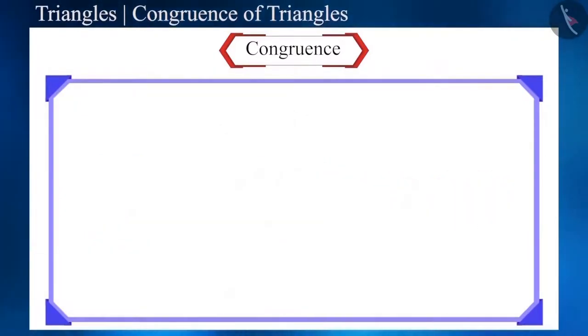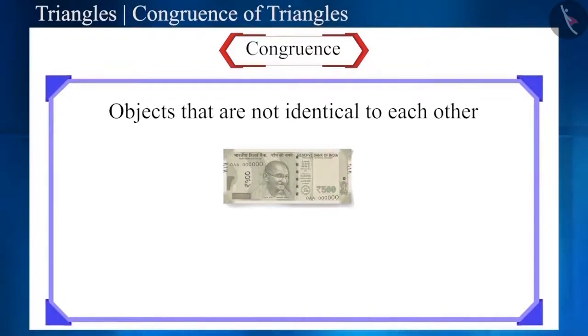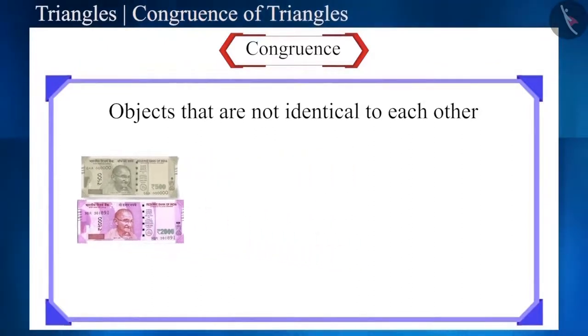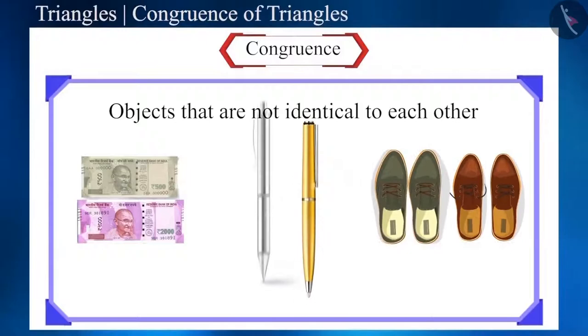And now, here are some objects that are not identical to each other. A 500 rupee note and a 2000 rupee note are not identical to each other. Shoes of different sizes and pens of two different companies, etc.